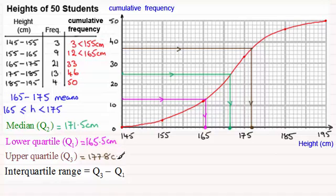Now when it comes to working out the interquartile range the difference between the upper quartile and the lower quartile then for this example what we've got is the upper quartile is 177.8 centimeters and we need to subtract then the lower quartile which is 165.5 centimeters. And what we get is 12.3 centimeters.